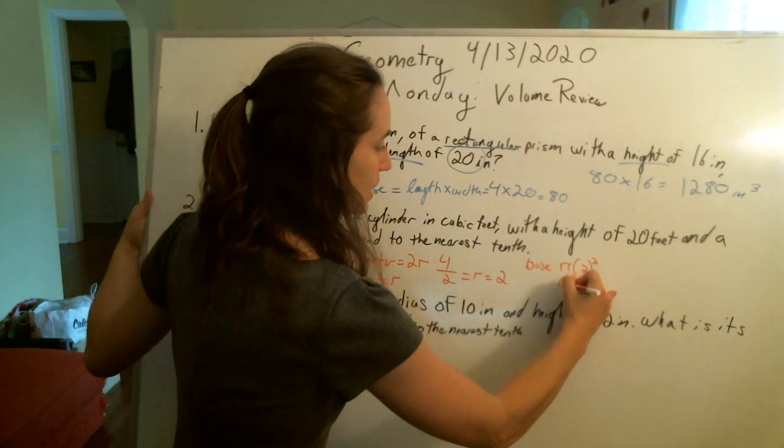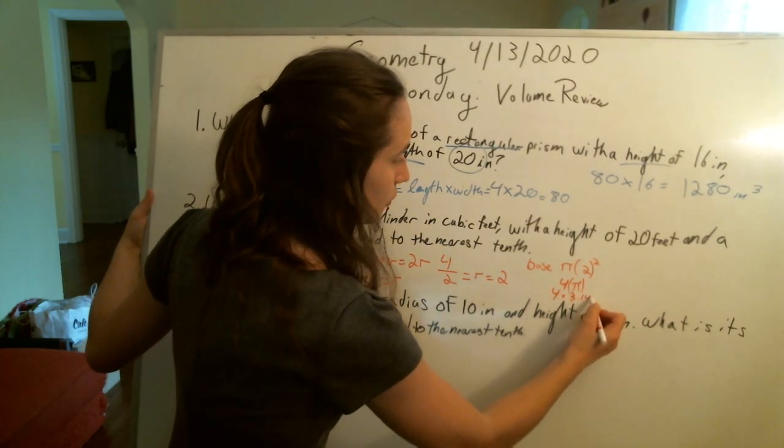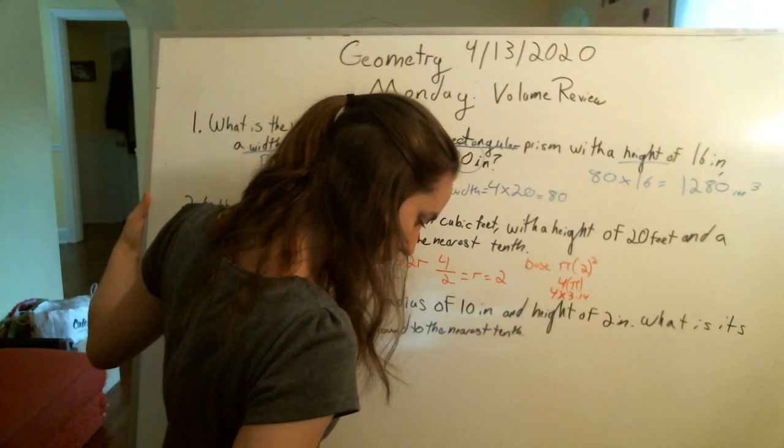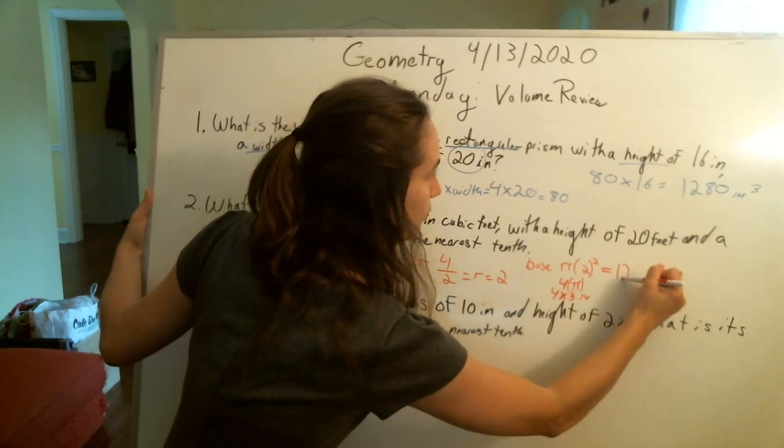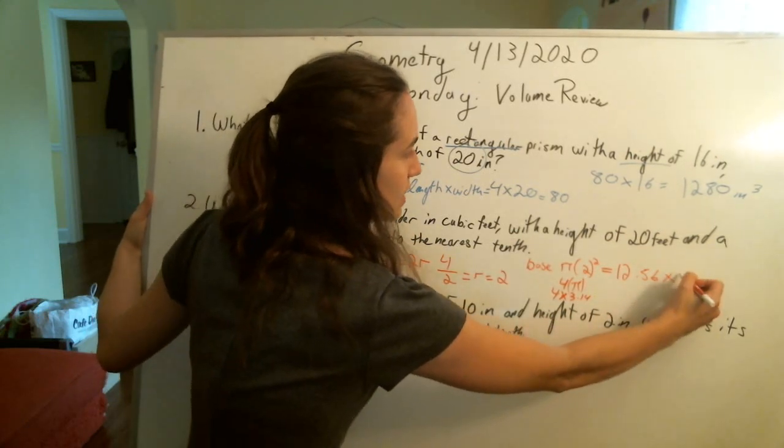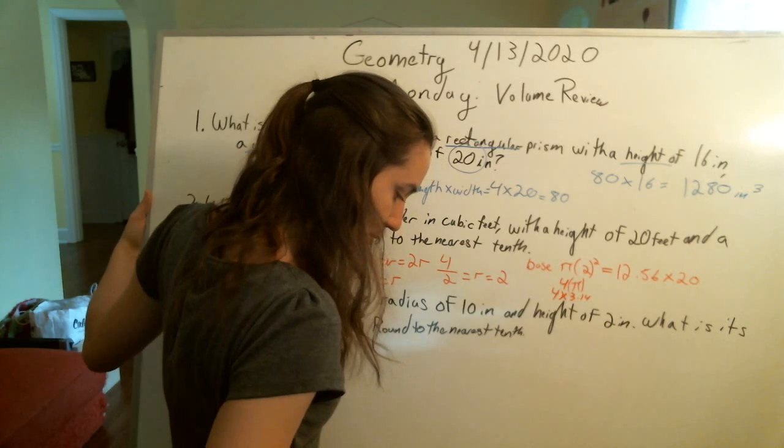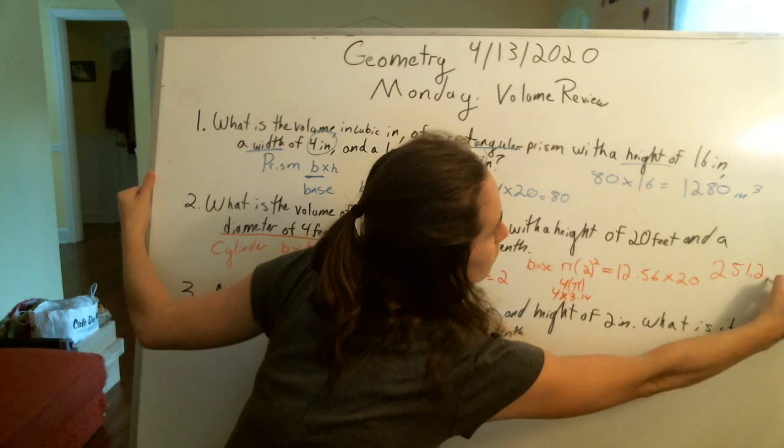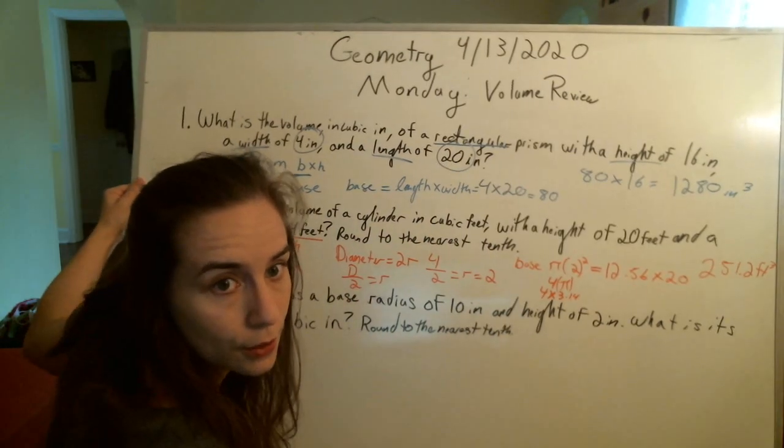So, 4 times 3.14, that's 12.56. And again, we're going to take our base times our height, so 12.56 times 20, and we get 251.2 feet cubed. Does that fit on there? There you go.